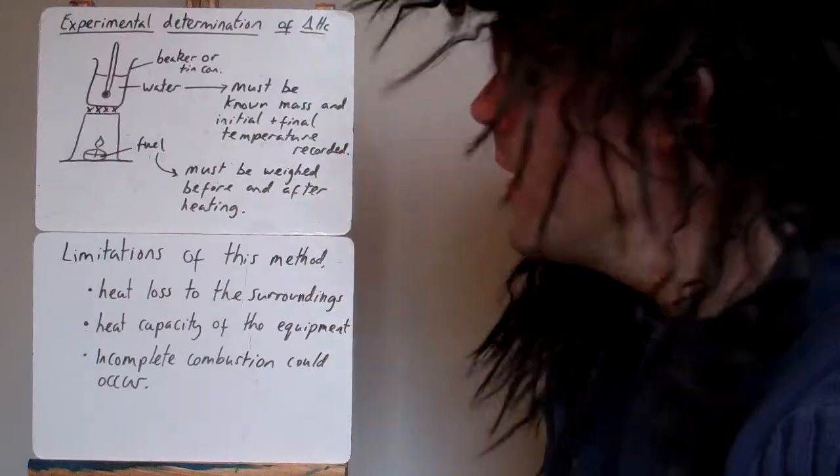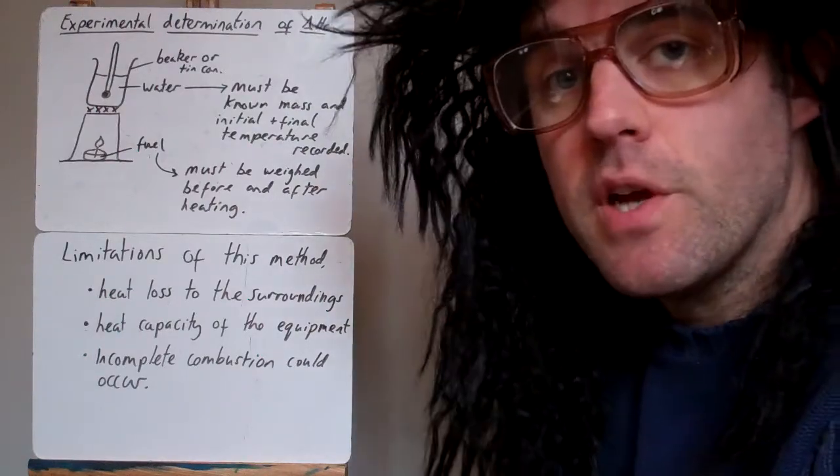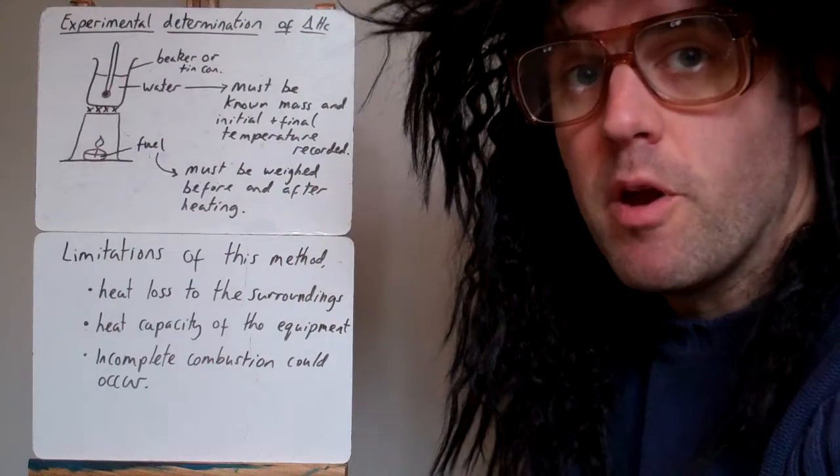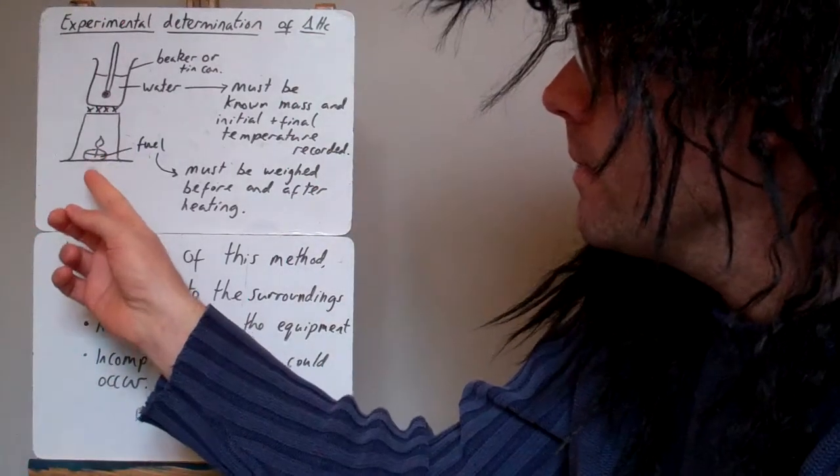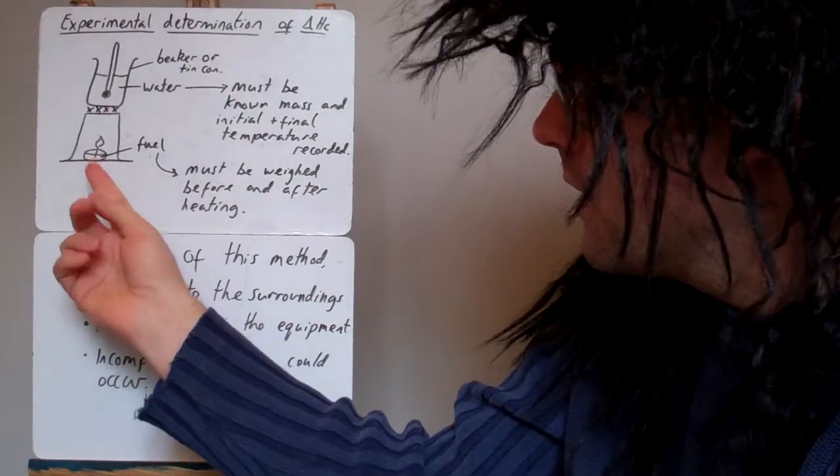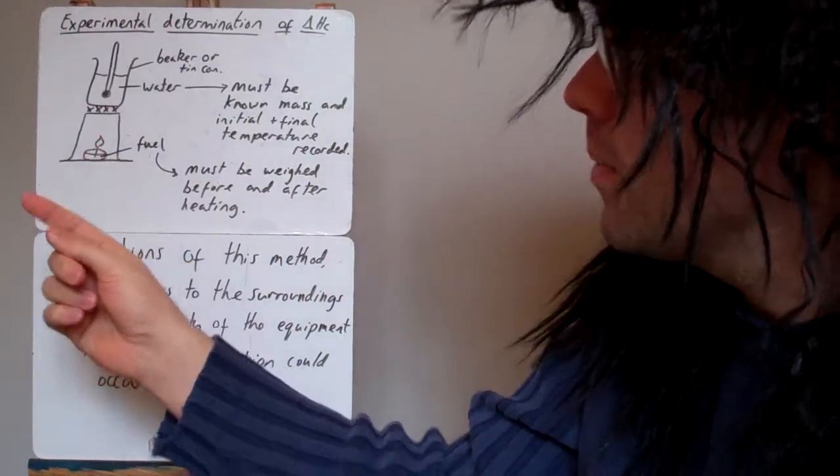This video looks at how we can determine the enthalpy change of combustion by experiments. The basic apparatus is to have a fuel burner that has a liquid fuel inside that goes up a wick and can be lit at the top.